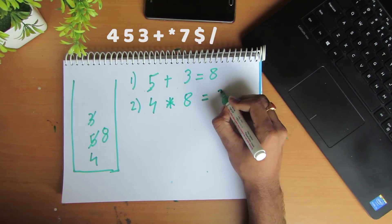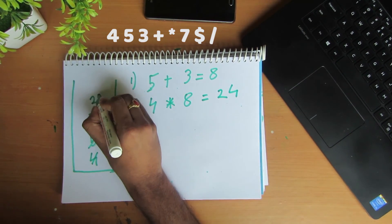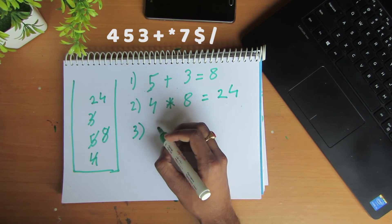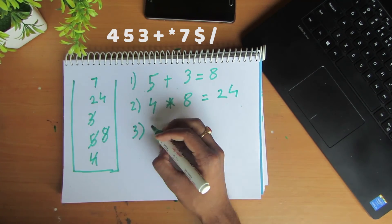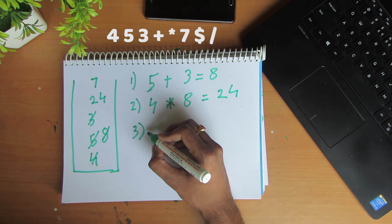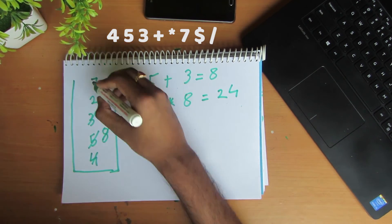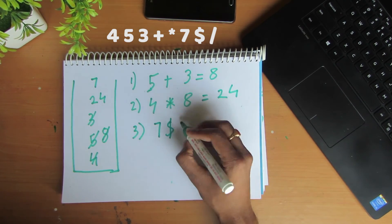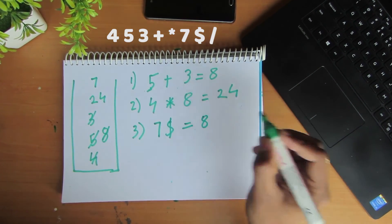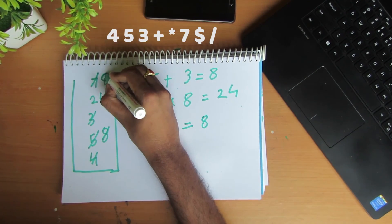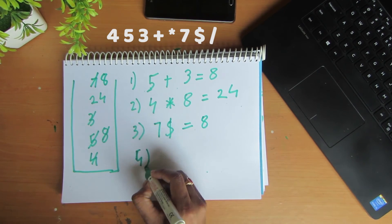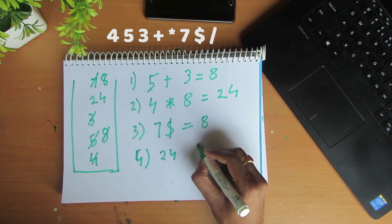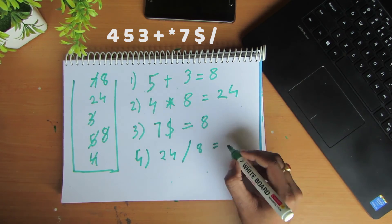Then we have 7, so we push it onto the stack. Next is ++, a unary operator, so we pop only one operand — 7 — increment it to get 8, and push 8 onto the stack. Then we have the division operator: we have 24 and 8 on the stack, so we divide 24 by 8 to get 3. We pop those two values and push 3 onto the stack.